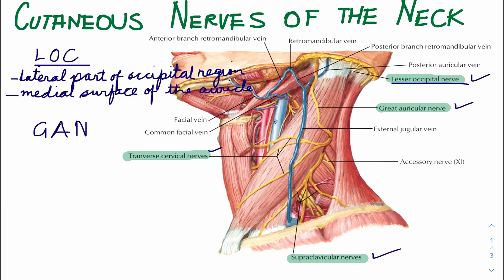The second nerve is the great auricular nerve. The great auricular nerve ascends across the sternocleidomastoid muscle and divides into branches that supply the skin over the angle of the mandible, the parotid gland, and on both surfaces of the auricle.